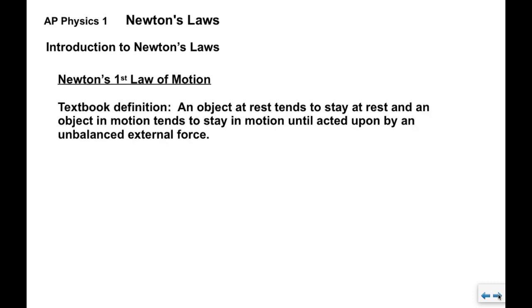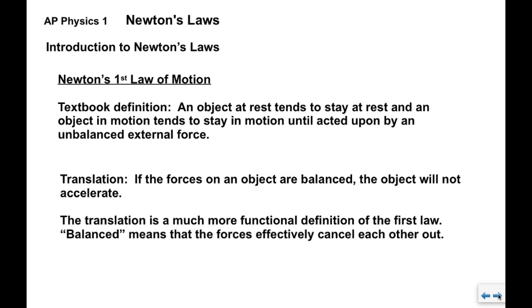Now first, we have Newton's first law of motion. The textbook definition is one that you will have heard before: an object at rest tends to stay at rest, an object in motion tends to stay in motion, until acted upon by an unbalanced external force. Again, most people can finish that one as soon as you say 'an object at rest.' The translation, very simply, is that if all the forces on an object are balanced, the object will not accelerate. This is a much more functional definition of the first law, which is also incidentally called the law of inertia.